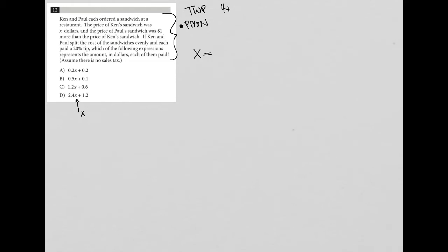So Ken's sandwich or X is equal to two dollars. And this equals Ken. And then Paul is going to pay three dollars. If Ken and Paul split the cost of the sandwiches, the sandwiches altogether were five dollars, which means that Ken is going to pay two dollars and 50 cents. And Paul is also going to pay two dollars and 50 cents.